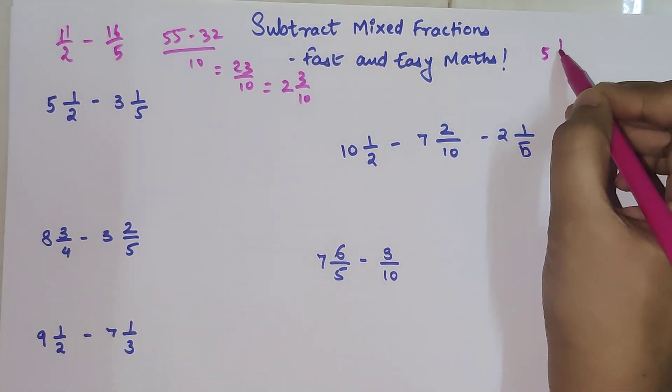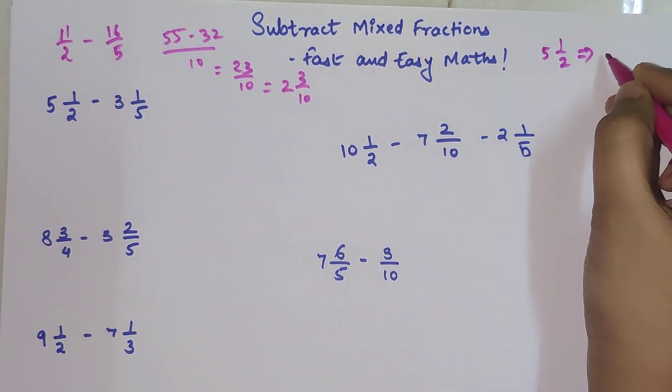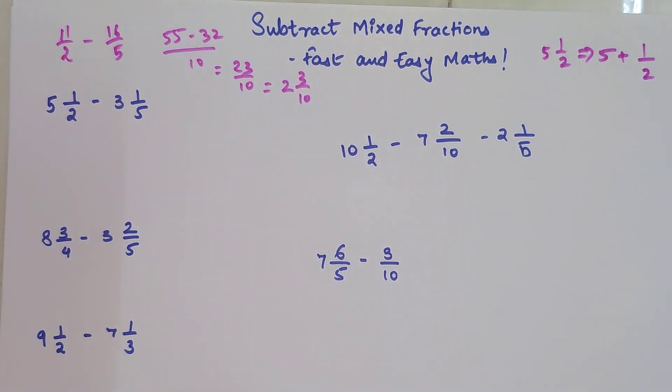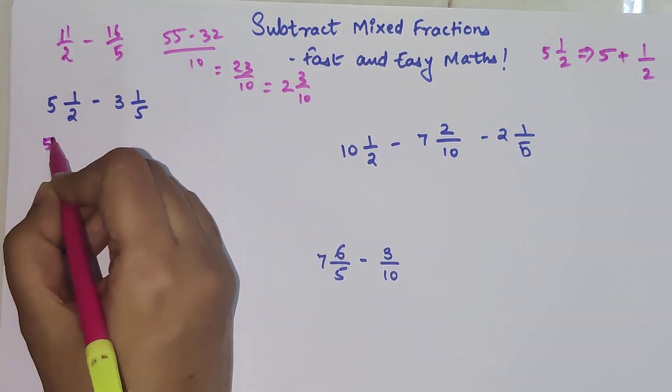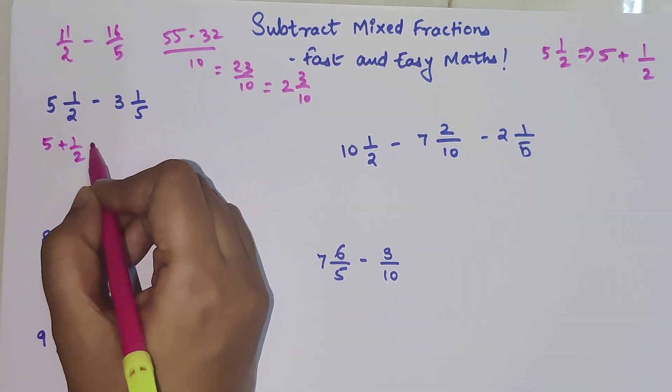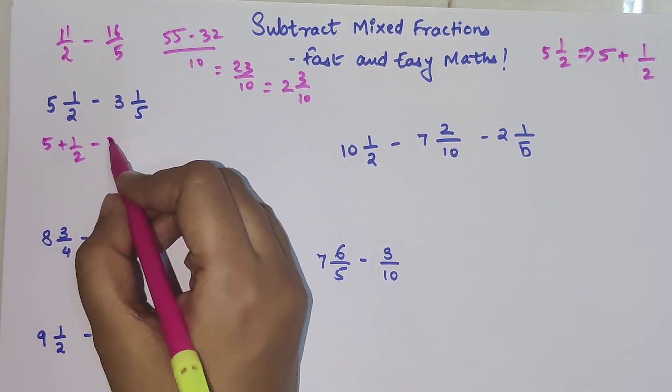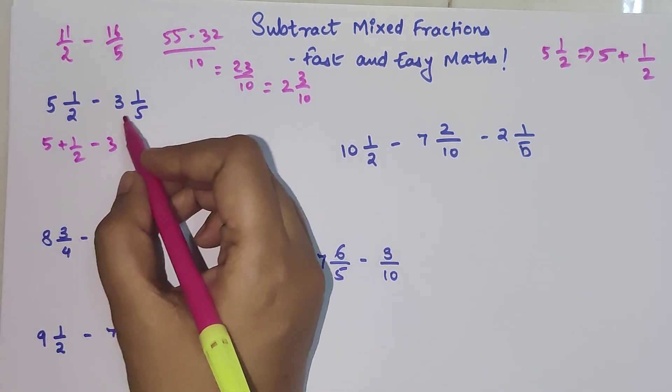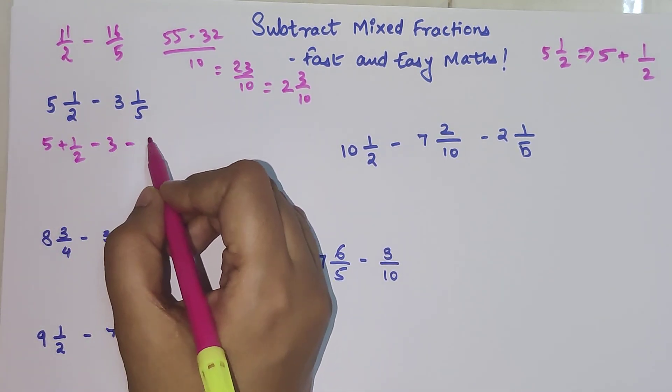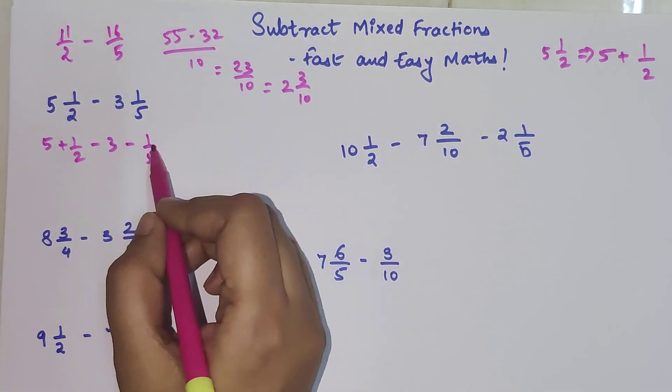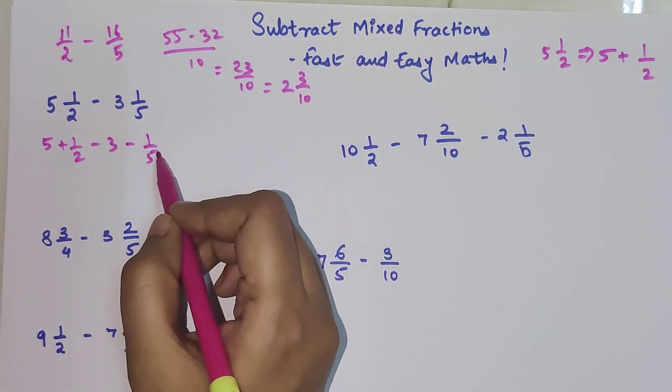Let's say you have 5 1/2, you can write this as 5 plus 1/2. So using that method we can write 5 plus 1/2 minus 3, put this into a bracket, and 1/5.